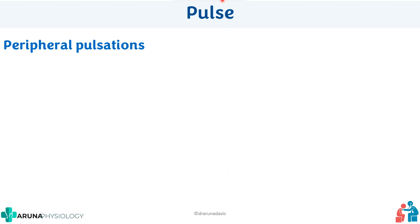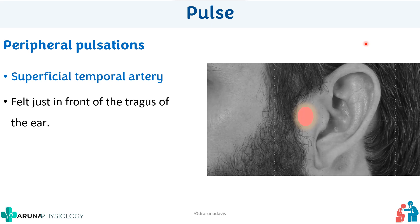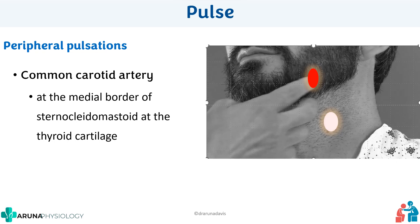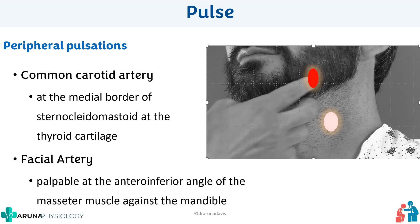Now check all peripheral pulses. First is the superficial temporal artery, felt just in front of the tragus of the ear. Next, the common carotid artery pulsations, felt at the medial border of the sternocleidomastoid at the level of the thyroid cartilage. Then the facial artery, felt at the antero-inferior angle of the masseter muscle against the mandible.